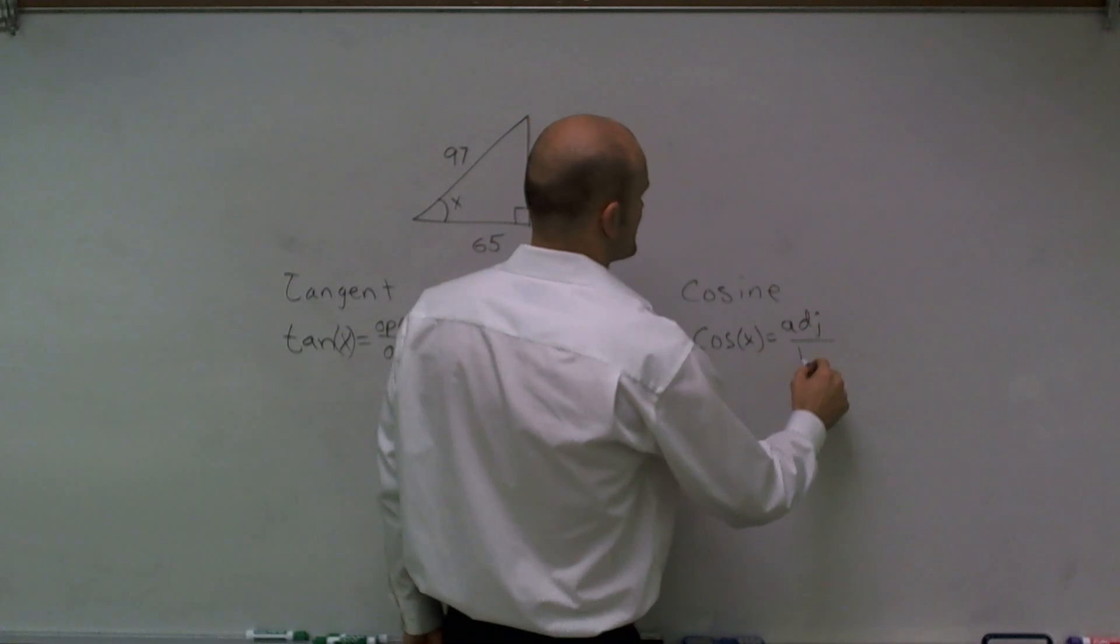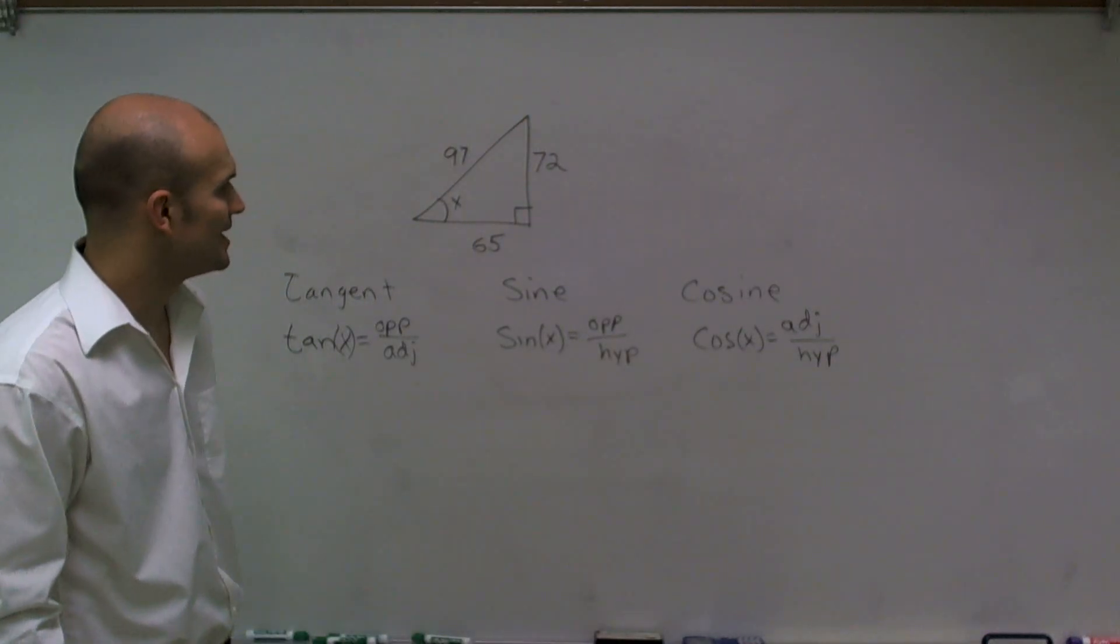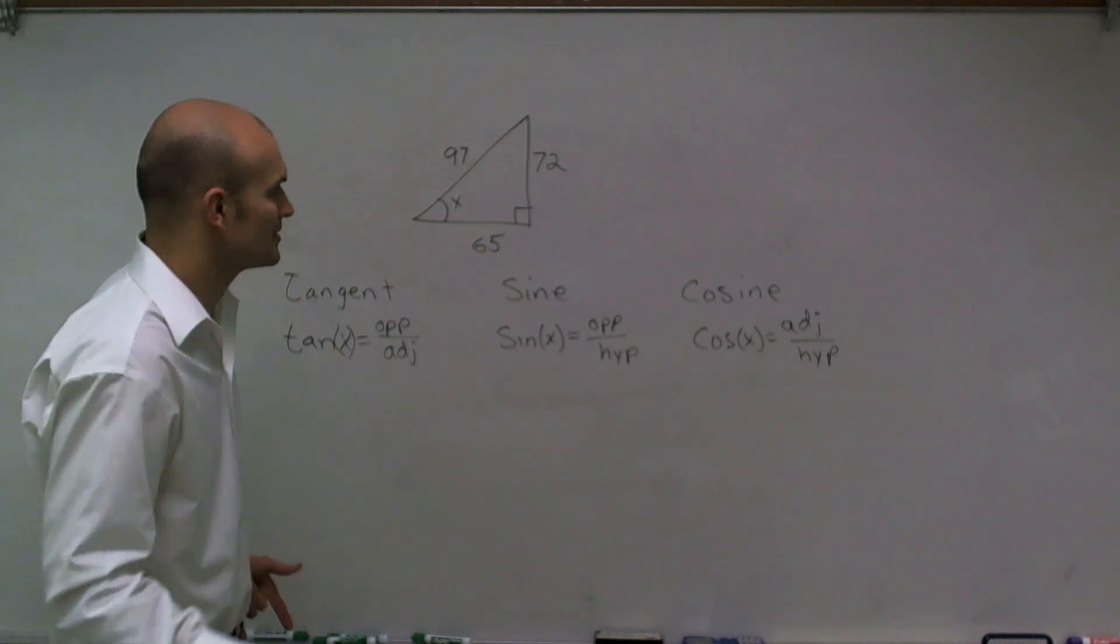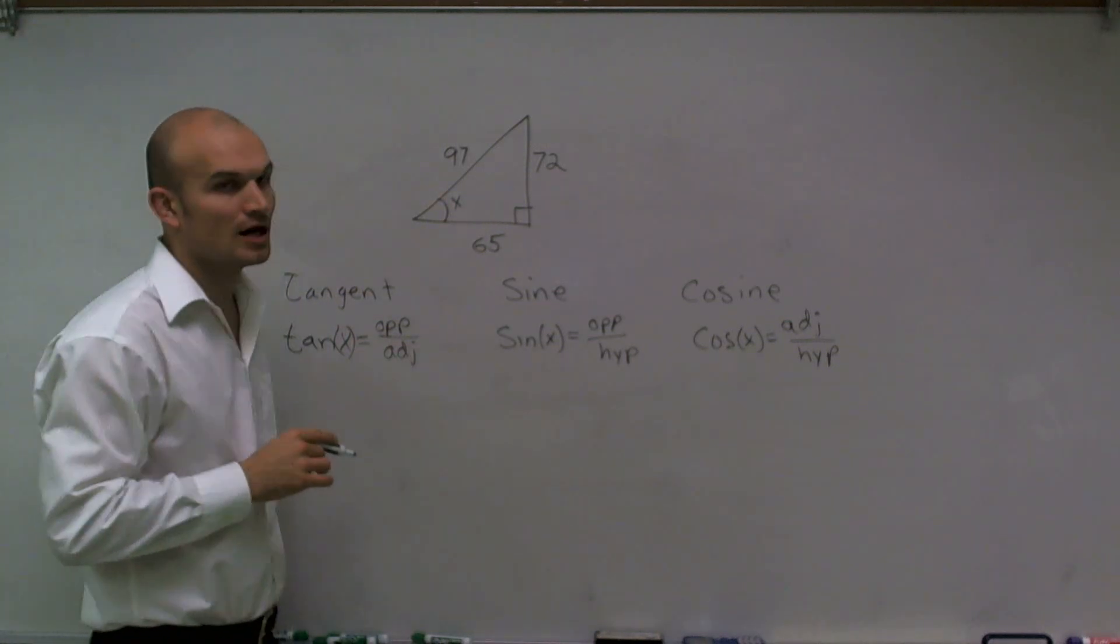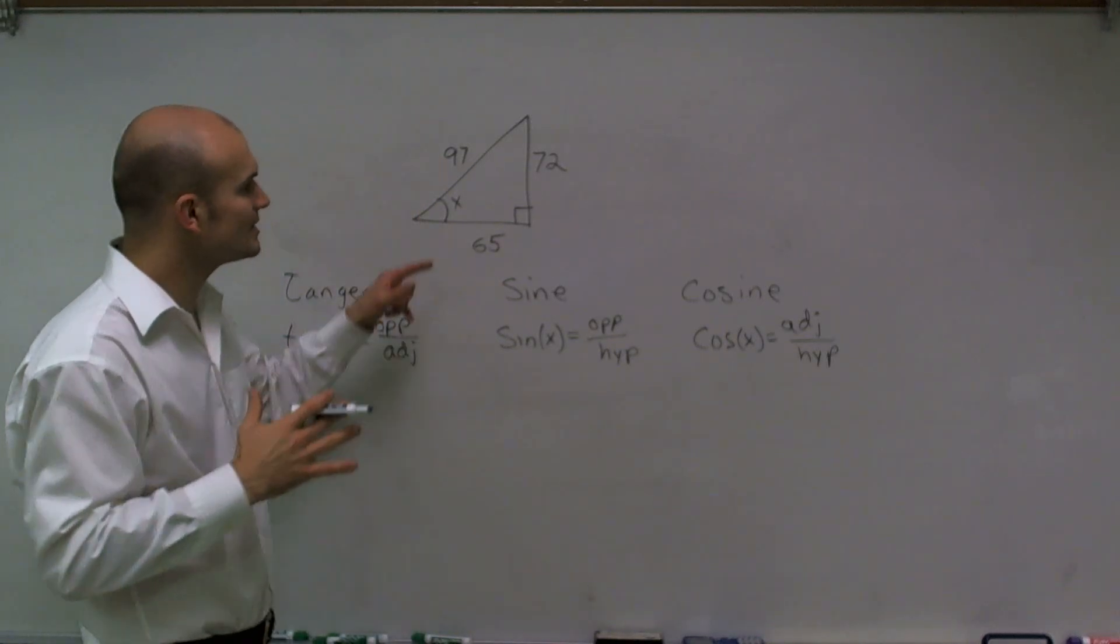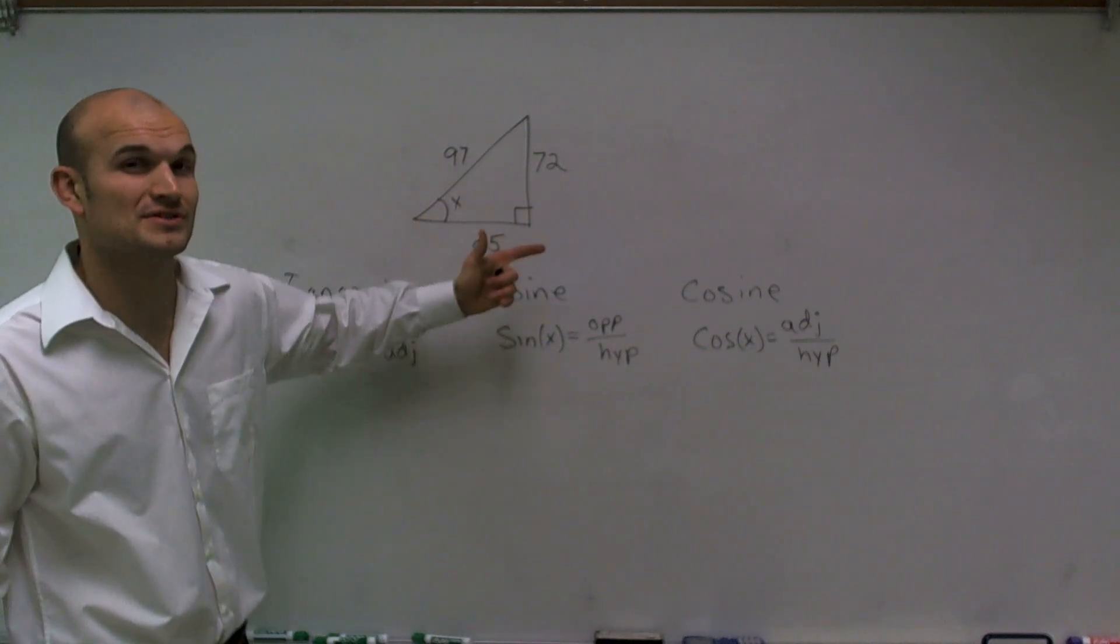You might be asking yourself, where are you getting hypotenuse, adjacent and opposite? Well, I get those by using my right angle and also by using my x. When I look at this and I see my angle x, one thing I need to determine is where the hypotenuse is.